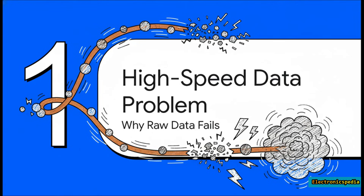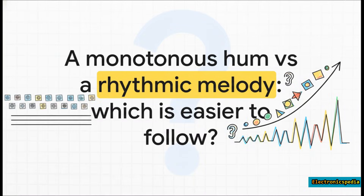Let's kick things off with the fundamental challenge. When you're trying to send billions of bits a second down a tiny copper wire, just blasting the raw ones and zeros doesn't really work. You run into some serious physical problems that can scramble the whole message. For a piece of hardware on the receiving end, a long string of the same bit — like a bunch of zeros all in a row — is just a monotonous hum. It's impossible to keep the beat. The receiver's internal clock starts to drift, and pretty soon it has no idea where one bit ends and the next one begins.